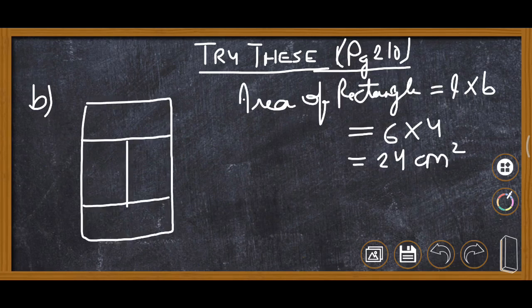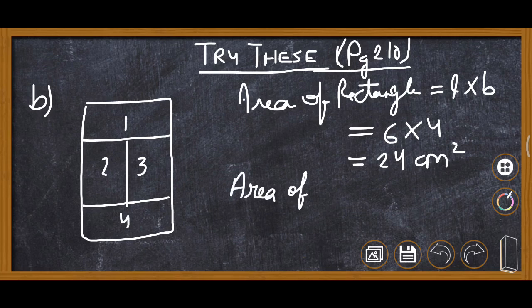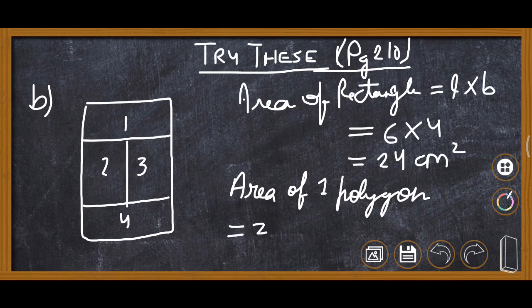This is question number two of the same 'Try These.' The figure has changed. Counting the parts: first part, second part, third part, fourth part — total four parts. So the area of one polygon is 24 upon 4, which equals 6 centimeter square.